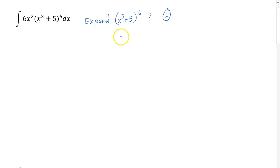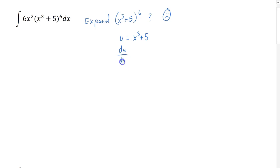I could make this integrand look a lot easier if I replace x cubed plus 5 with some other variable. Typically, we use u, but feel free to use whatever you want — just don't use x, because then you'll get really confused. So I'm going to let u take the place of x cubed plus 5. Oftentimes, if there's something in parentheses or underneath a radical, we might make that substitution. I also want to write down the derivative: the derivative of u would be 3x squared. Multiplying both sides by dx, I get du equals 3x squared dx.